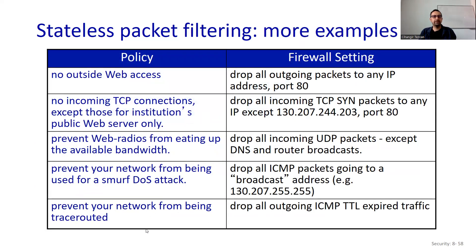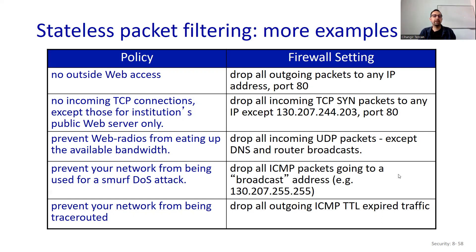Here are some policies and their corresponding firewall settings for stateless packet filtering. For no outside web access, drop all outgoing packets to any IP address with port 80. For no incoming TCP connections except to the institution's public web server, drop all incoming TCP SYN packets to any IP except that server's IP and port. To prevent web radio from eating bandwidth, drop all inbound UDP packets except DNS and router broadcasts. To prevent SMURF denial-of-service attacks, drop all ICMP packets going to broadcast addresses. To prevent trace routing, drop all outgoing ICMP TTL-expired traffic.